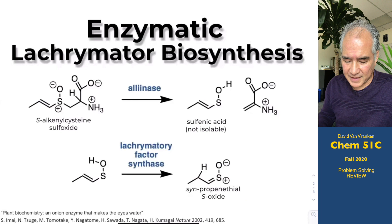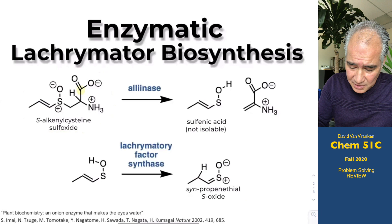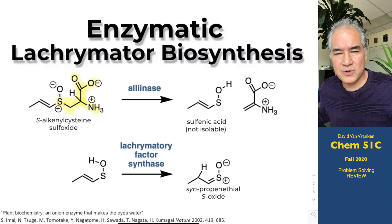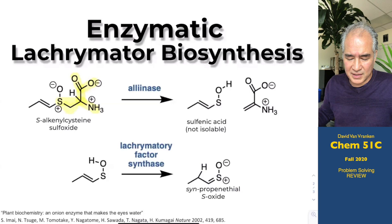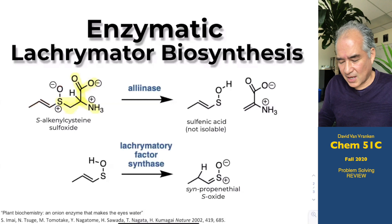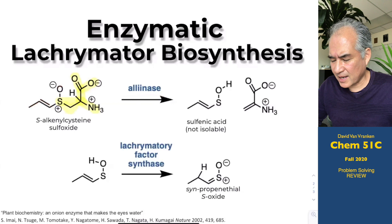Floating around inside of onion cells, there's a sulfoxide molecule derived from cysteine. The carboxylate, ammonium group, carbon, and sulfur are a natural part of cysteine — one of the 20 ribosomally incorporated amino acids. But the extra three-carbon chain and oxygen are not normal parts of cysteine. This metabolite floats around in onion cells, and the enzyme alliinase converts and fragments this molecule through a class of pericyclic reactions called a retroene reaction.